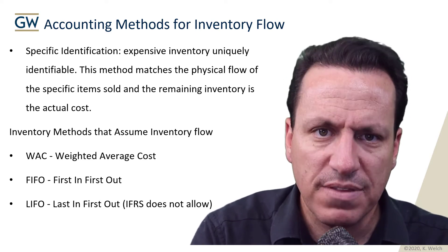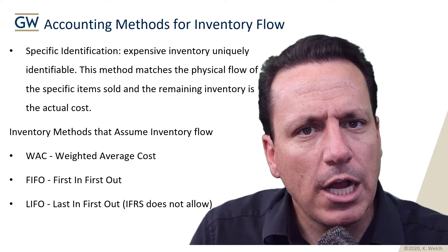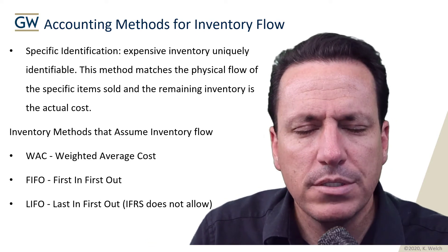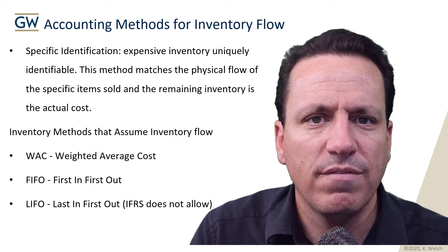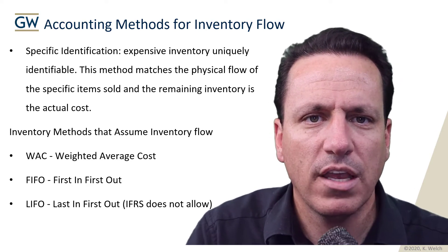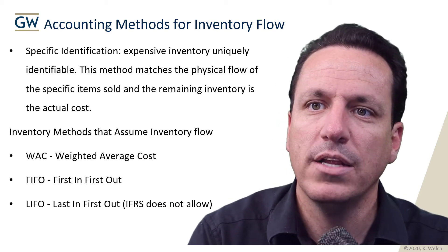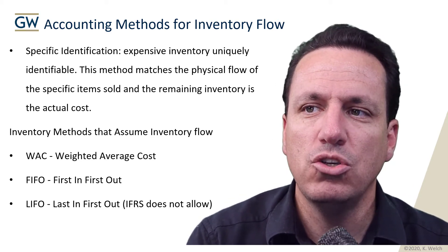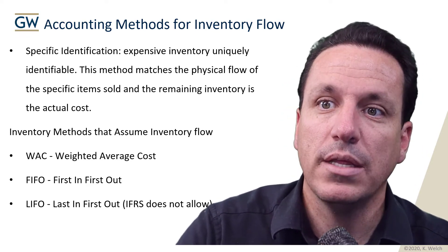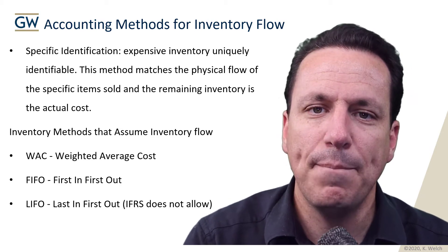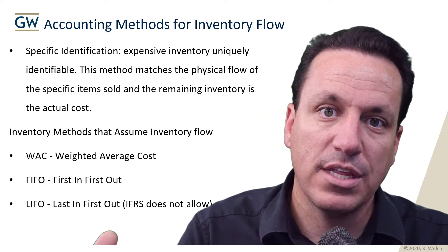Specific identification usually happens with expensive things. If you're selling McLaren cars, these are not cheap — they're expensive. They know where all their cars are in their inventory; they don't lose a car. They just track them all. Specific identification is usually used on expensive inventory or inventory that is uniquely identifiable, and it matches the actual flow. A specific car, like a red McLaren, traces all the way through your inventory until it's sold, and the cost of goods sold represents that actual car.